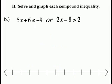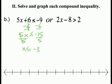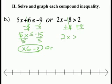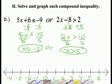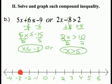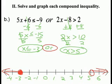Now solve and graph the following 'or' inequality — solve each inequality separately. For the first: subtract 6 from both sides to get 5x ≤ -15, then divide by 5, giving x ≤ -3. Or: add 8 to both sides to get 2x > 10, then divide by 2, giving x > 5. Graph both on the same number line with negative 3 and 5 visible. At negative 3, put a closed circle; at 5, an open circle. It's an 'or' statement — shade to the outside: left of negative 3 and right of 5.